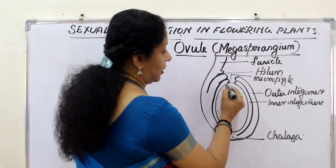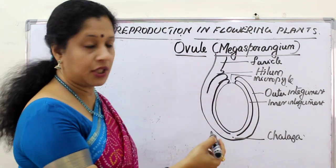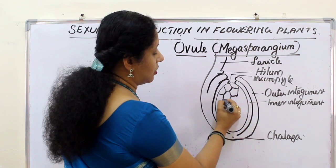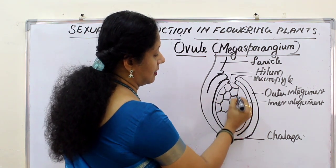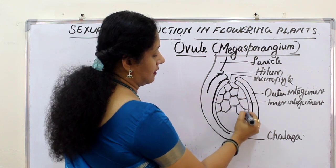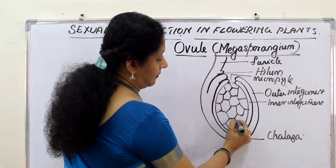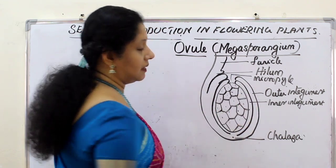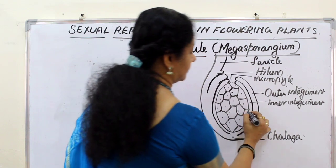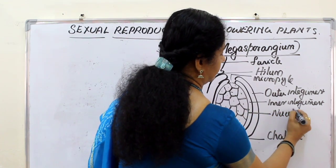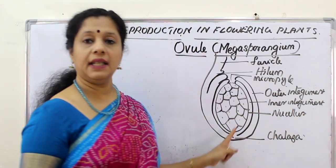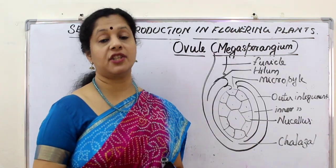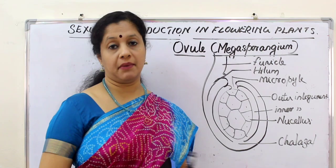Inside the ovule is the nucellar tissue, which is a nursing, nutritive tissue. Within the nucellus, the embryo sac will form — this is the female gametophyte. Now we will learn the process of megasporogenesis: how the embryo sac is formed.